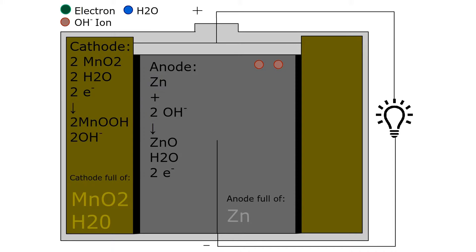In a battery, once the circuit is closed, the reaction begins. Inside the anode, zinc and hydroxide ions form zinc oxide, which stays in the anode, and water molecules.